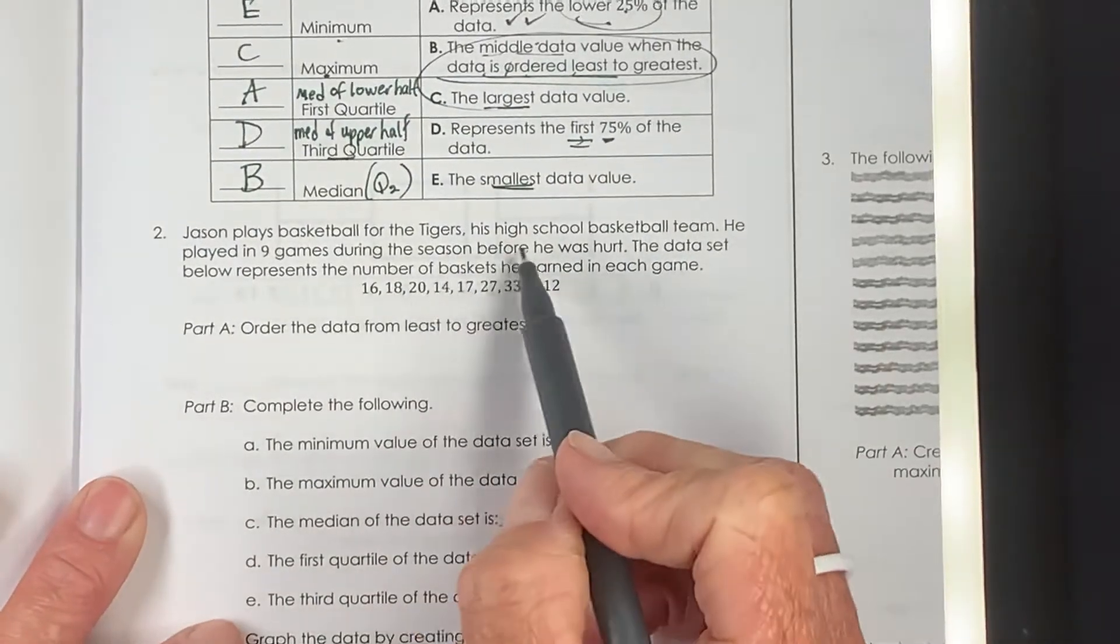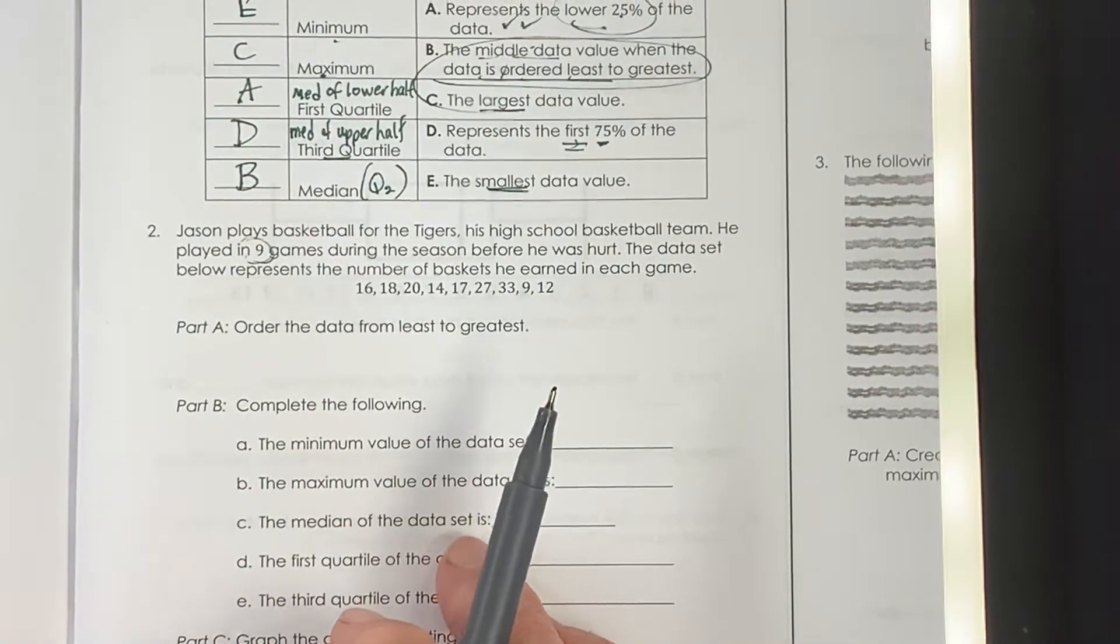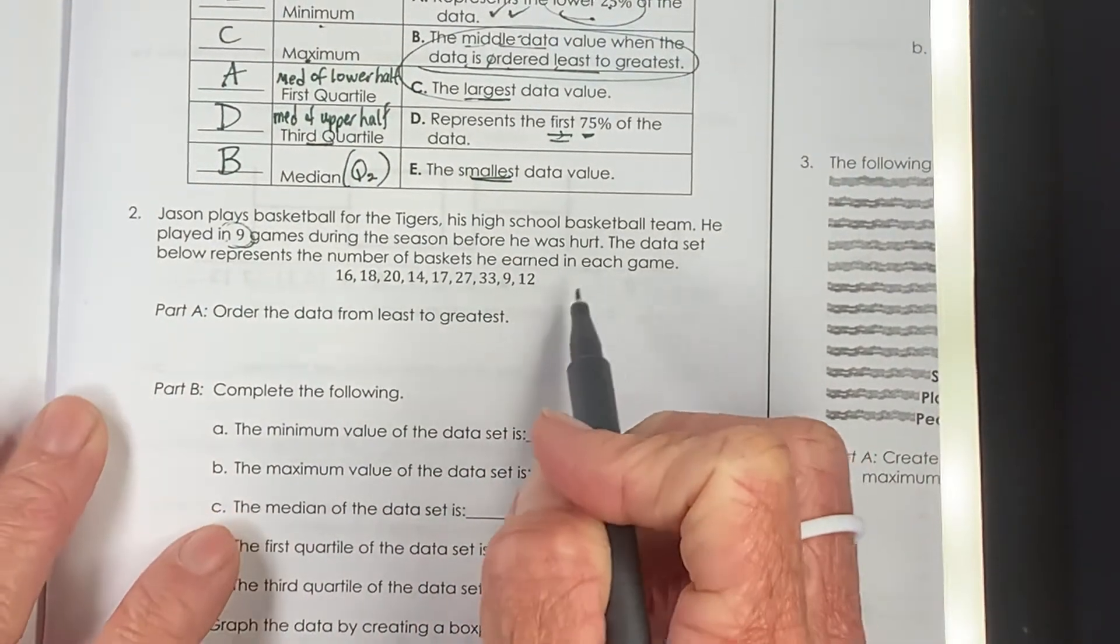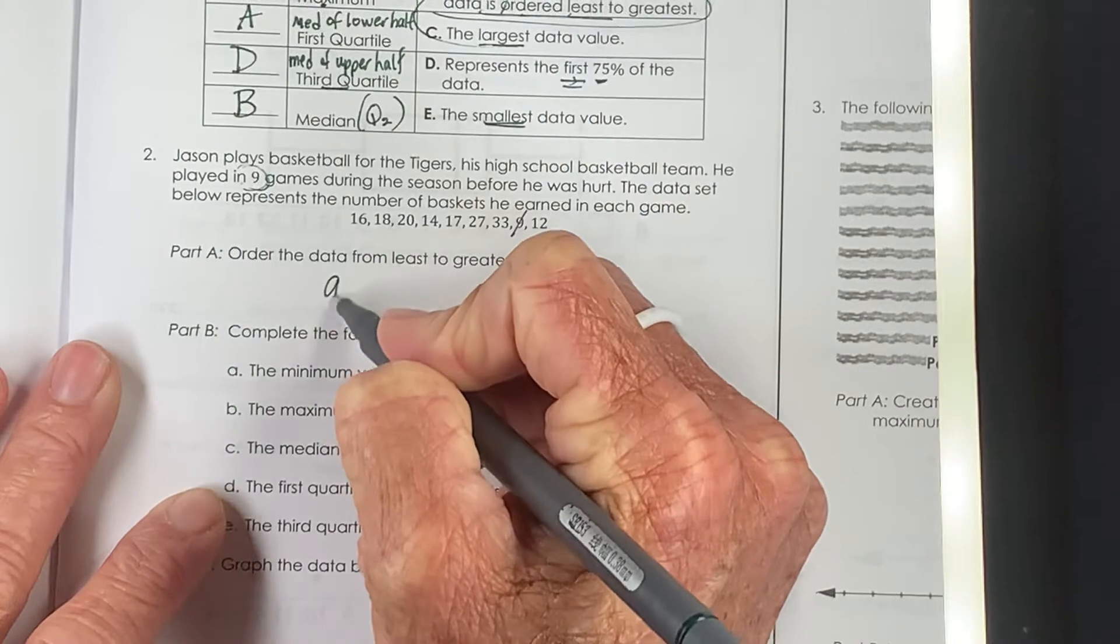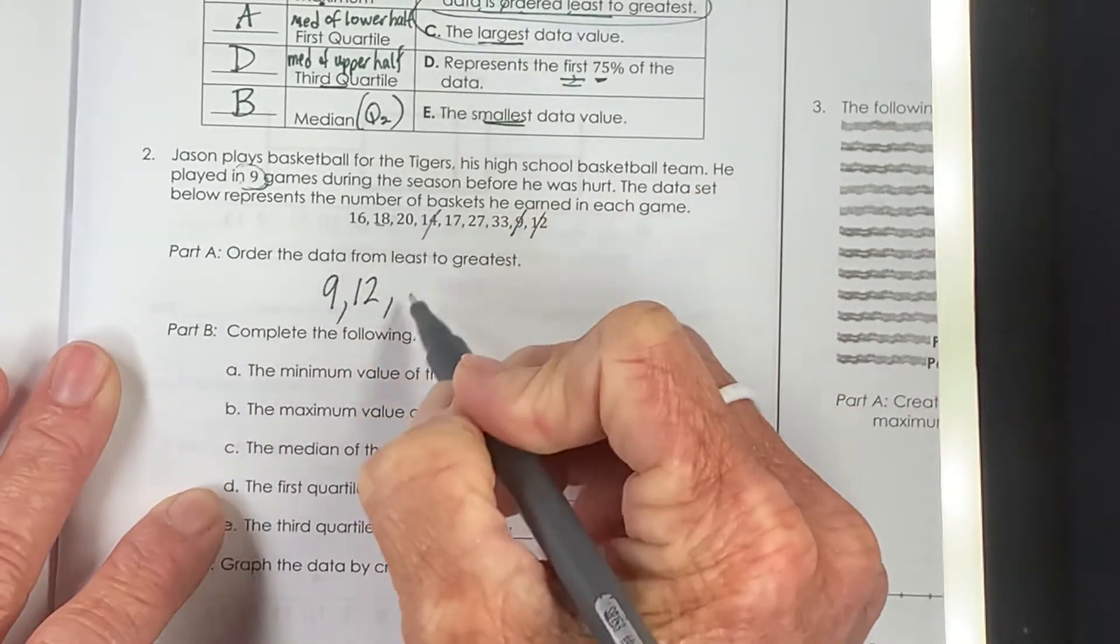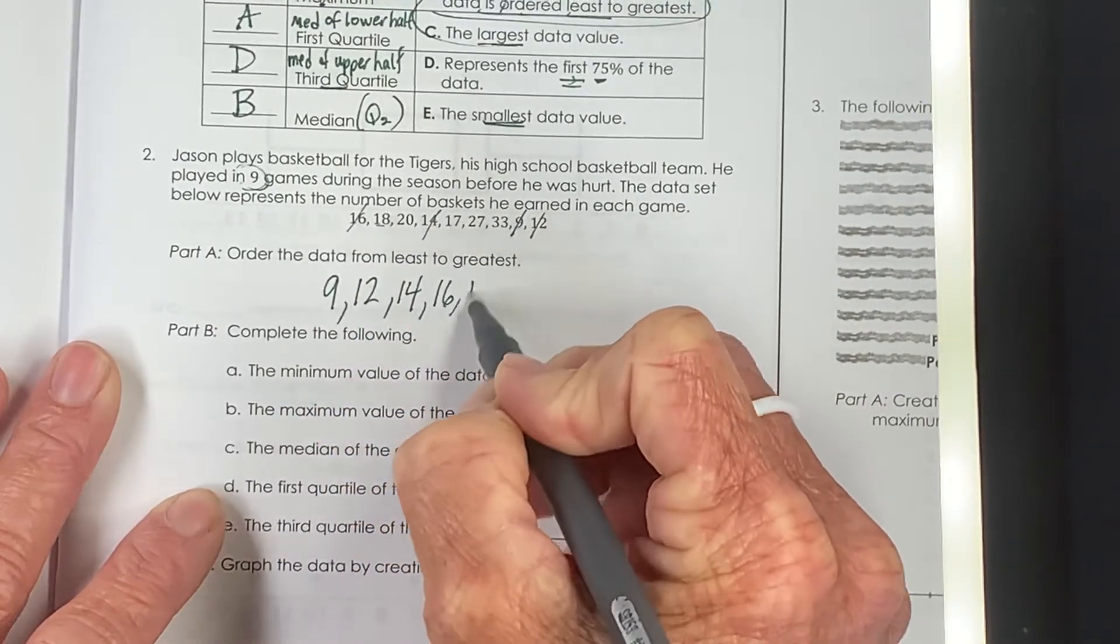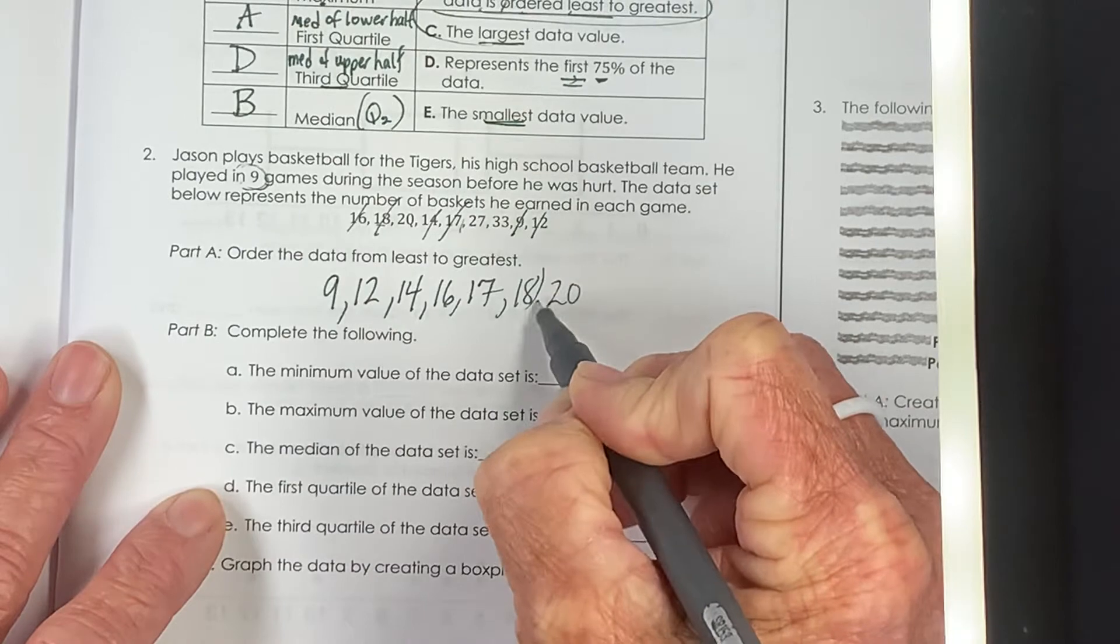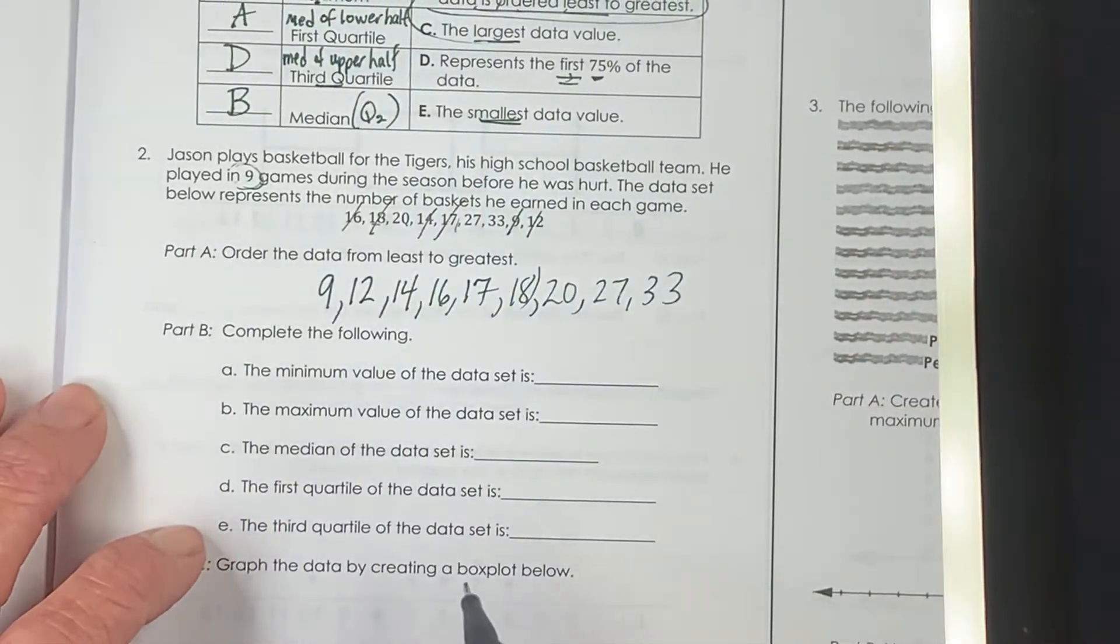Jason plays basketball on his high school team. He played nine games, so we have nine values in our data set, but he got hurt and he couldn't finish the season. The data set represents the number of baskets he earned in each game. So when you're doing box plots, it is important that it's in order from least to greatest. So starting with nine, the next number I see is 12, looks like 14, 16, 17, 18, 20, that's supposed to be a comma, 27 and 33. So there's our data in order.